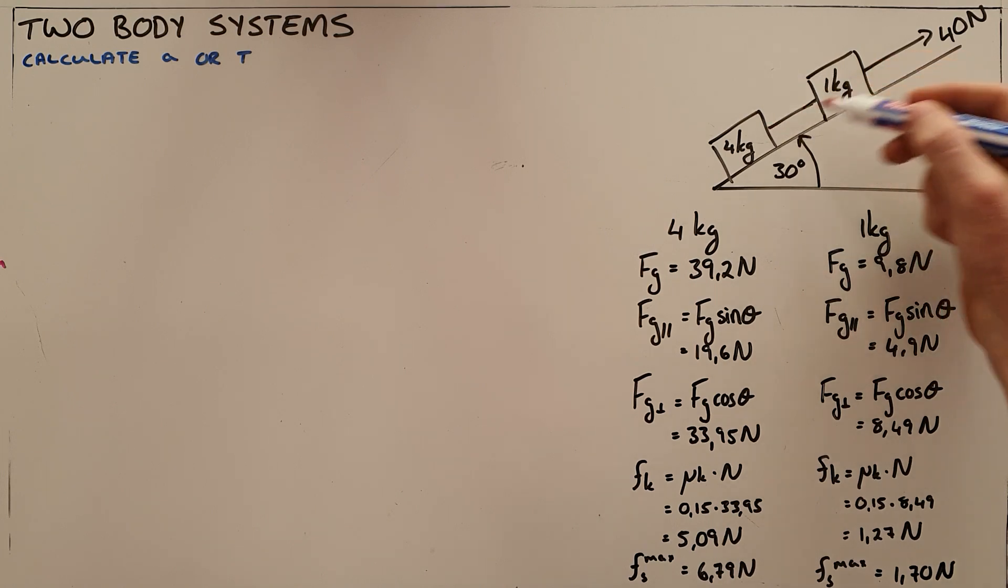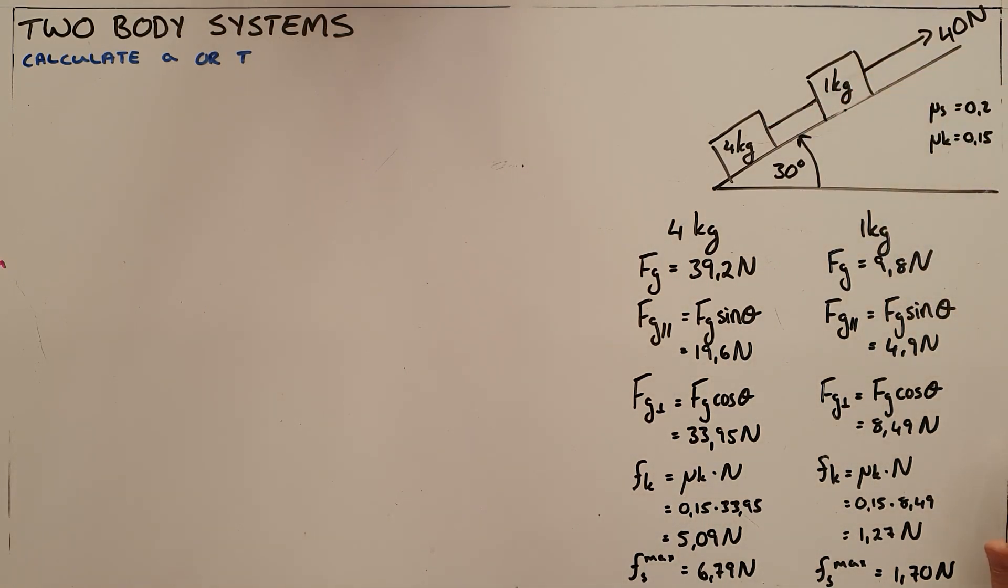It's two objects that are joined by an inextensible rope, basically saying the rope cannot stretch, the rope will also not go slack.